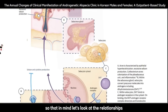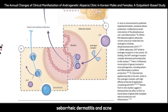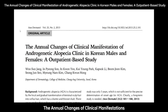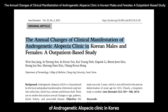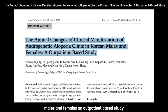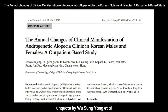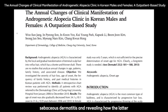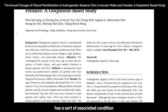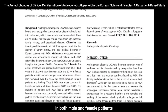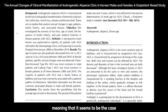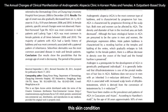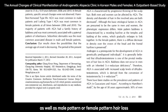With that in mind, let's look at the relationships between androgenetic alopecia, seborrheic dermatitis, and acne. There was a study titled "The Annual Changes of Clinical Manifestations of Androgenetic Alopecia Clinic in Korea Males and Females: An Outpatient-Based Study" by Wu Sunggyang et al., 2013. It goes into the complex relationship between androgenetic alopecia and seborrheic dermatitis, revealing how the latter has a sort of associated condition in both male and female patients with androgenetic alopecia — meaning there seems to be some interplay between people that have seborrheic dermatitis and male or female pattern hair loss.